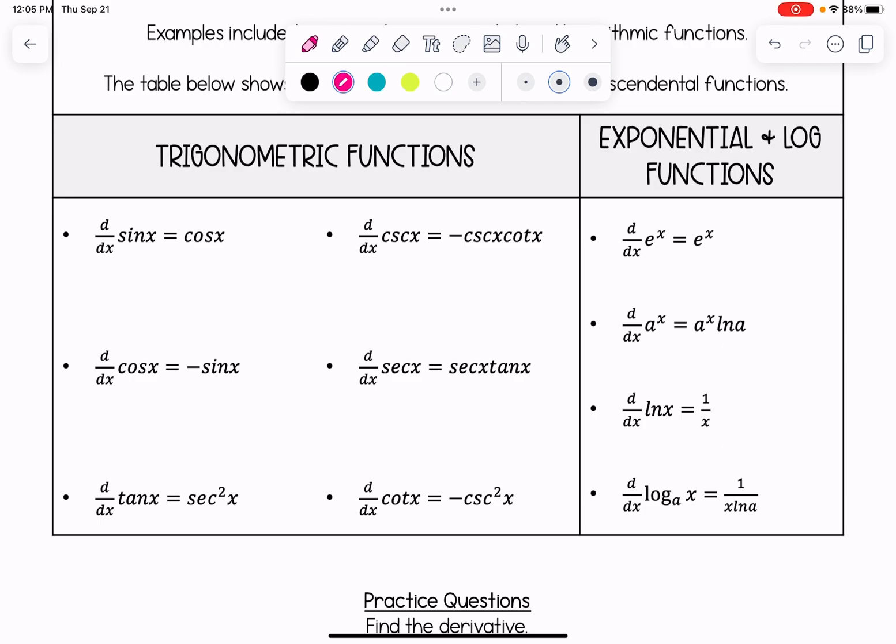On the left here, we have all the derivatives of the six trig functions. The derivative of sine is cosine. The derivative of cosine is negative sine. The derivative of tangent is secant squared.